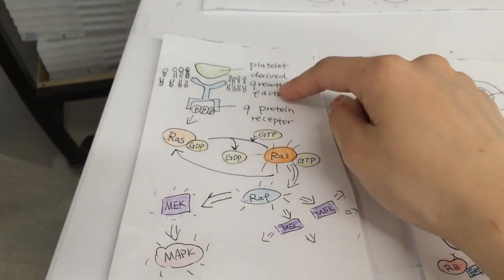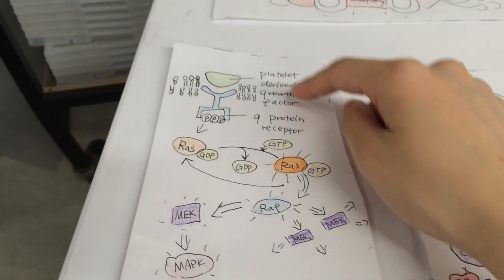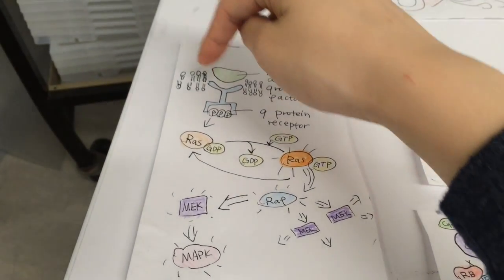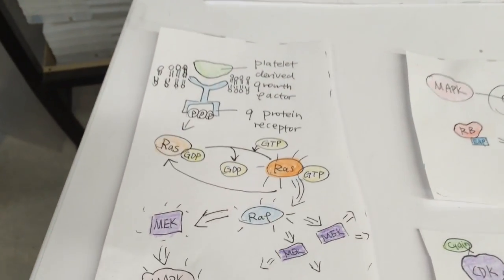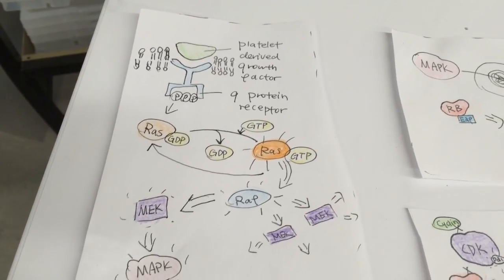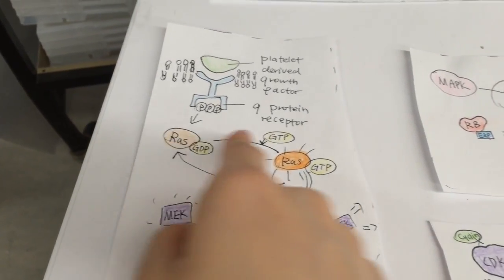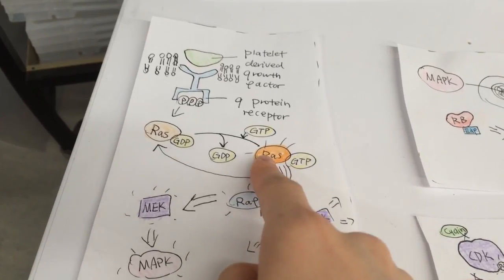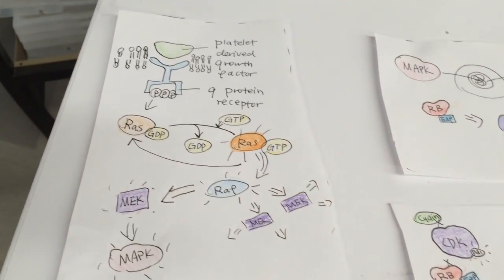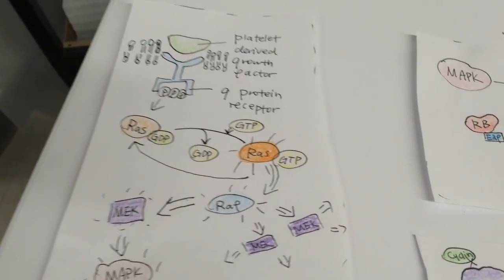On the cell membrane, an initial growth factor from nearby cells acts as a ligand to trigger the G protein receptor, which phosphorylates and activates the protein RAS. RAS is considered a proto-oncogene, the gas pedal of the cell cycle, because it goes on to activate RAF, starting an entire protein kinase cascade.